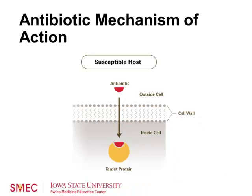Next, we'll discuss how antibiotics actually attack bacteria. Our susceptible host — for example, our pig — contains a bacterial cell with a cell wall. Once the antibiotic is inside the host, it seeks out cells with specific characteristics. Many bacterial cells have a cell wall, while animal cells do not, so the antibiotic targets the bacterial cells by looking for cell walls. Once it penetrates inside the bacterial cell, it locates its target, attaches, and carries out actions that destroy that bacterial cell.